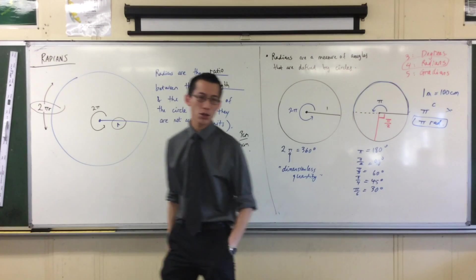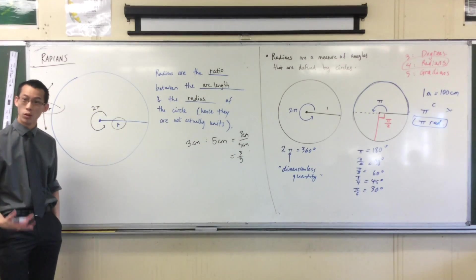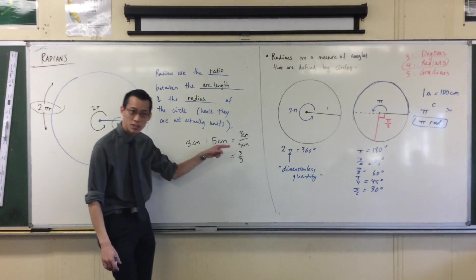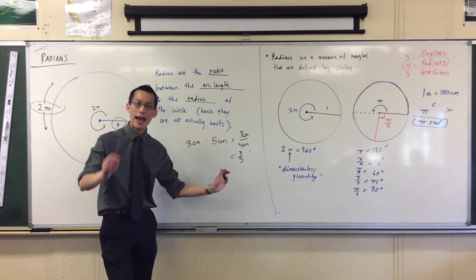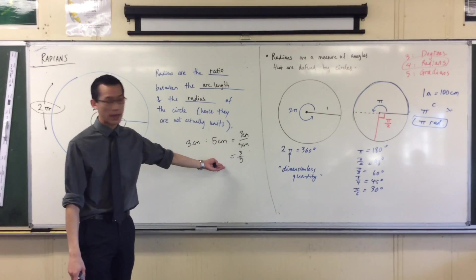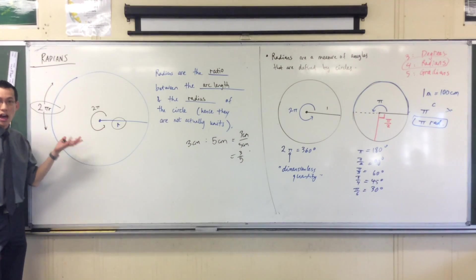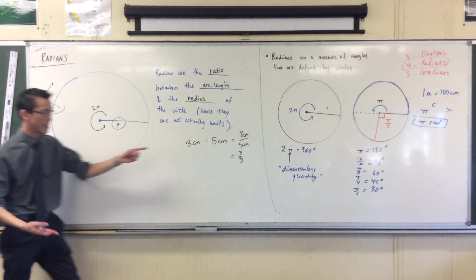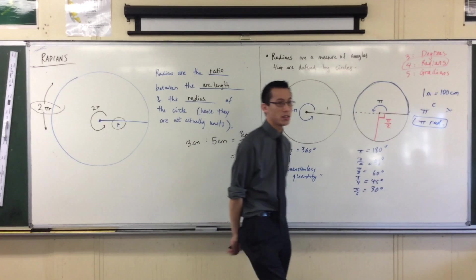It doesn't care if you're talking in centimeters, or meters, or kilometers, or light years. The ratio is still the same number, and it's just a number. There are no units attached to this ratio. And being that radians are a ratio, just like this is a ratio, hence they are dimensionless.